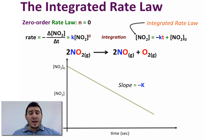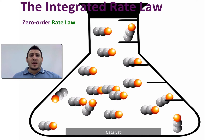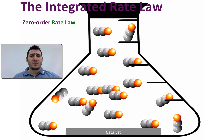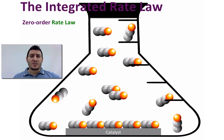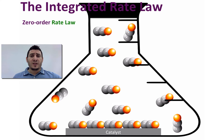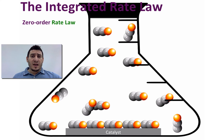How can a reaction be independent of the concentration of a reactant? Consider a catalyst where the reaction happens only at the surface. No matter how much you increase the concentration of the reactants, if the total surface of the catalyst is occupied, no more molecules can be deposited on the surface to react. Therefore the concentration of the reactant and the rate will both be constant with time.